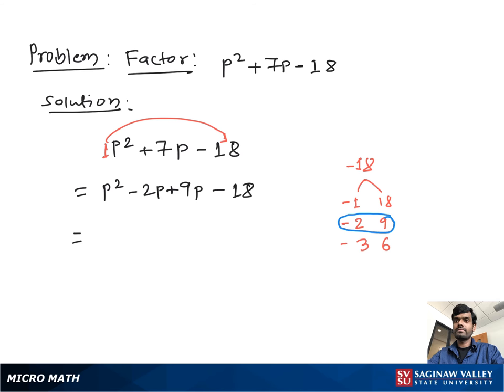So you can write P times parenthesis P minus 2, then plus 9 as common, and we get 9 times parenthesis P minus 2. From both sides we take P minus 2 as common, so we write P minus 2 and take the remaining P plus 9. This is our final factor.